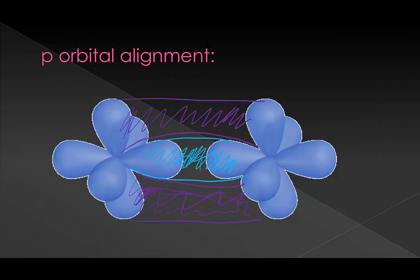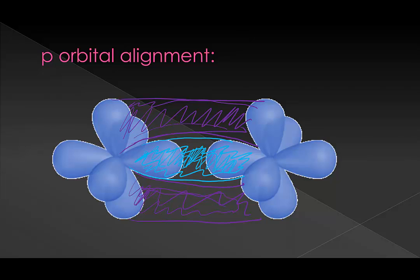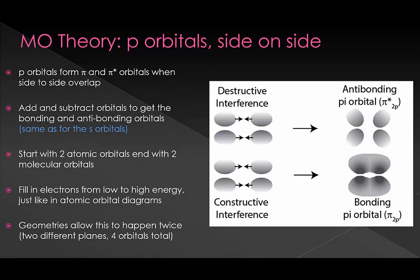Our other p orbitals can also overlap, and if those overlap they do so as a different shape — this two-lobed structure has a different symmetry, which we call pi. Whenever we overlap the orbitals side on side, we can also get constructive or destructive interference. If you overlap them side on side constructively, you get two lobes, and with our nuclei here, most of our electron density is actually between the two nuclei.